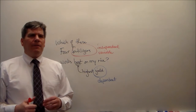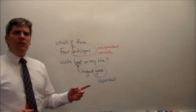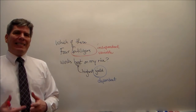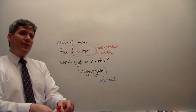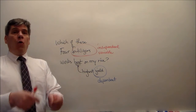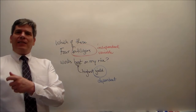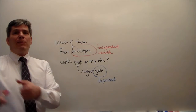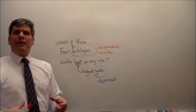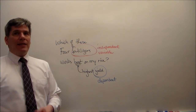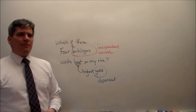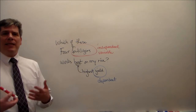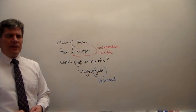Why is the fertilizer type the independent variable and the yield the dependent variable? Which comes first in the planting season — the applying of the fertilizer, the treatment, or the harvesting and determining the yield? The yield happens last. Because the fertilizer comes before the yield, the fertilizer has to be the independent variable.